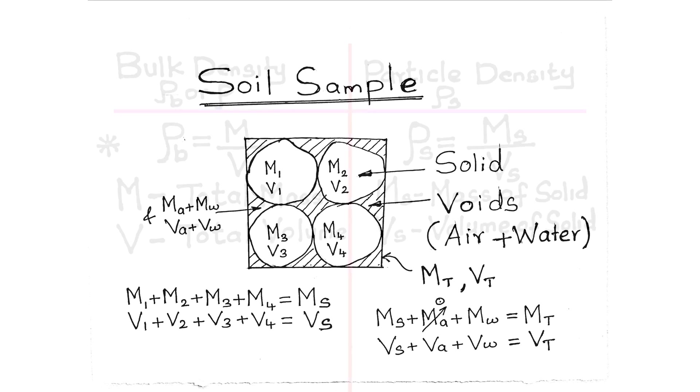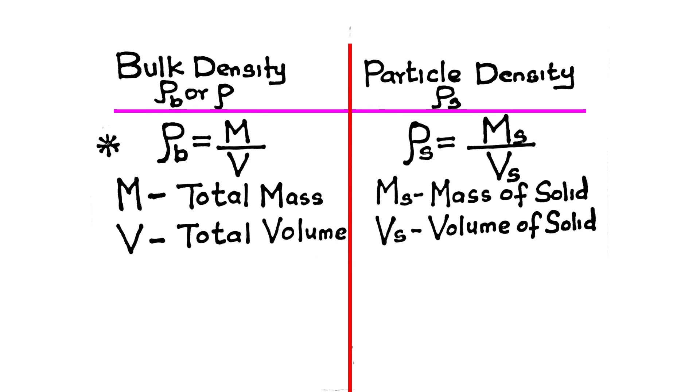Now let us see bulk density and particle density. Bulk density is total mass over total volume, i.e., ρb equals M over V or Mt over Vt. Particle density is mass of solid upon volume of solid, i.e., ρs equals Ms over Vs.